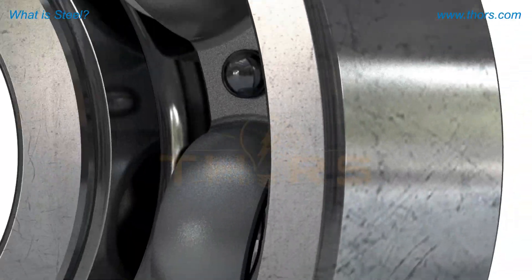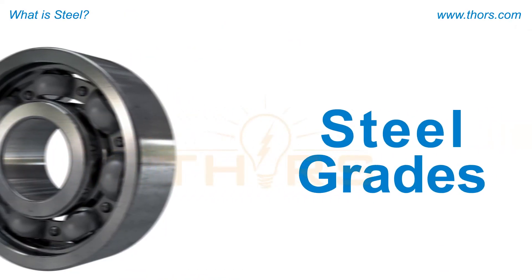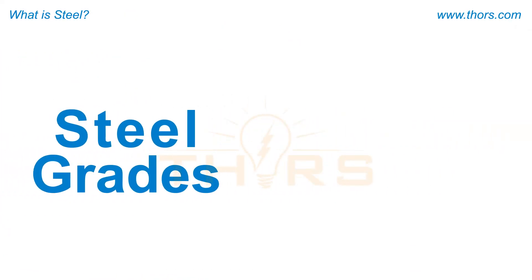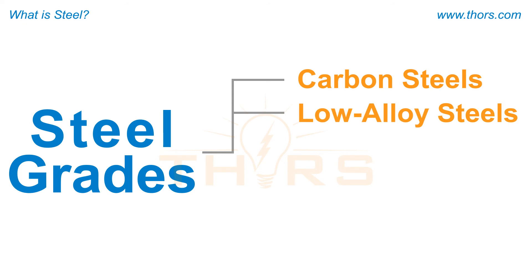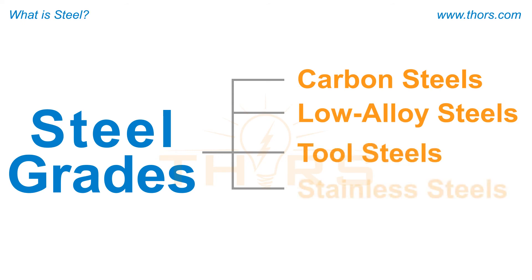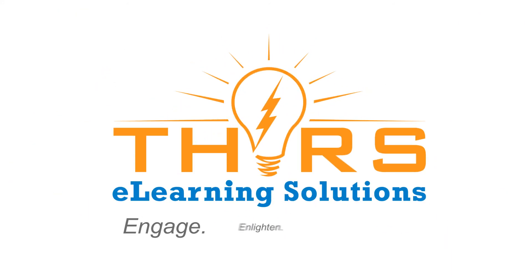The chemical composition of the steel and its properties determines the various grades of steels, which are divided into carbon steels, low alloy steels, tool steels, stainless steels, and electrical steels.